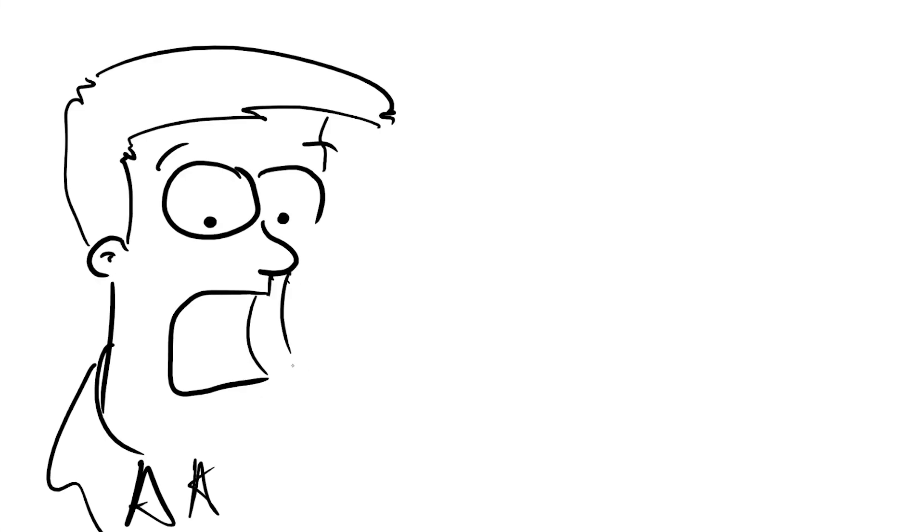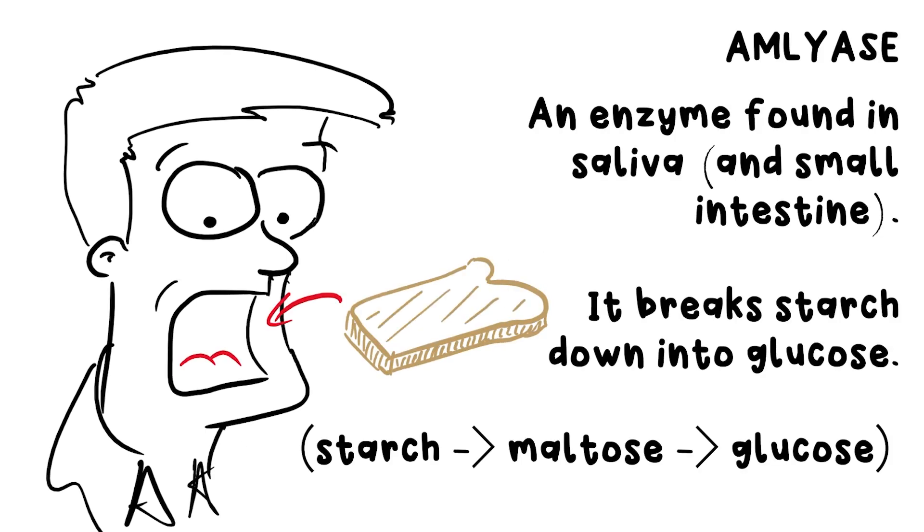From the moment a piece of bread enters your mouth, an enzyme called amylase, which is in your saliva, starts breaking down starch into glucose. There is an in-between stage too: maltose. It's worth knowing, but the important thing is that it ends up as glucose in the end.